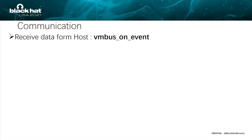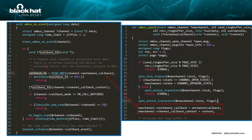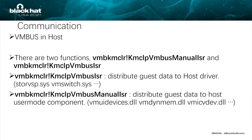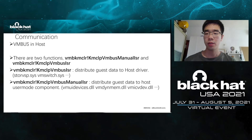The VMBusOnInvent function is used for receiving data from the host. In this function, a callback function will be invoked at the red mark. The callback function pointer is set in the VMBusOpen function. There are two functions: KMCLP VMBus ISR is used to distribute guest data to host drivers such as VMSwitch, and KMCLP VMBus manual ISR is used to distribute guest data to host user mode components such as VMUI devices.